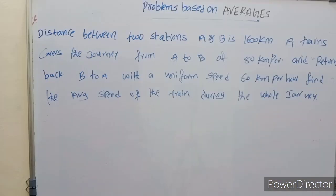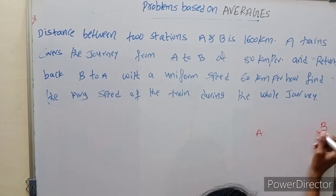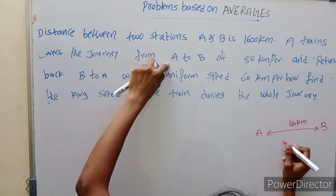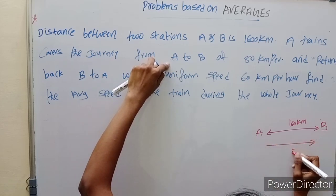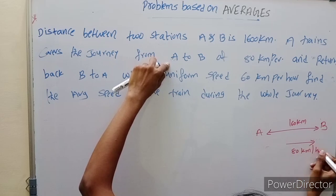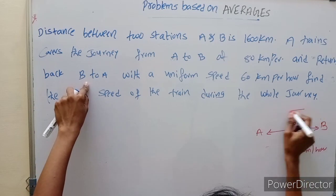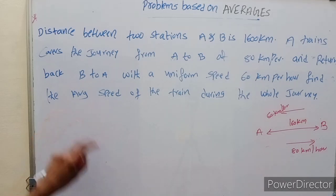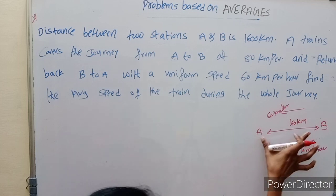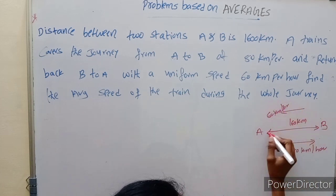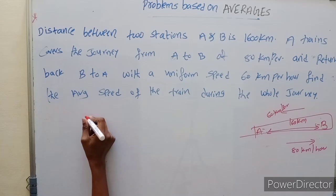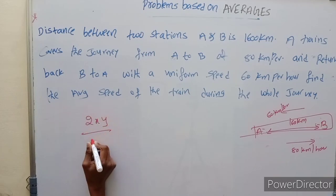Next problem: the distance between two stations A and B is 1600 kilometers. A train covers the journey from A to B at 80 kilometers per hour and returns from B to A at 60 kilometers per hour. Find the average speed of the train during the whole journey. Distance is the same both ways but speeds are different. The formula for average speed when distance is same is 2XY divided by X plus Y.